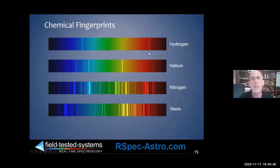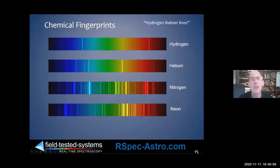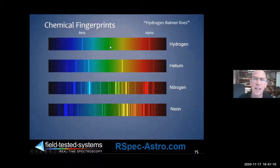These spectral lines are unique between elements — they are fingerprints. Helium is very different from hydrogen; this hydrogen line just doesn't exist in helium. There's so much hydrogen in stars that it's useful to have terms for these lines. We've even given them names like Greek letters — for example, hydrogen alpha is in red, and hydrogen beta is in that robin egg blue.